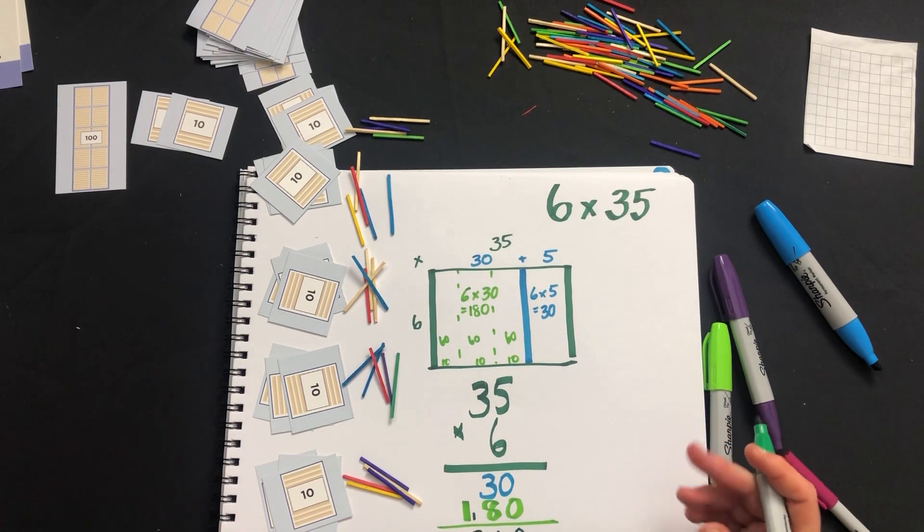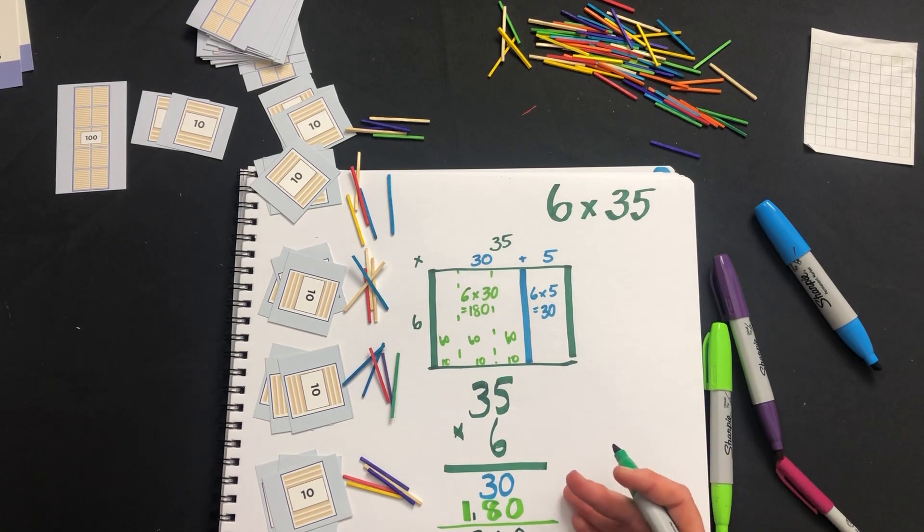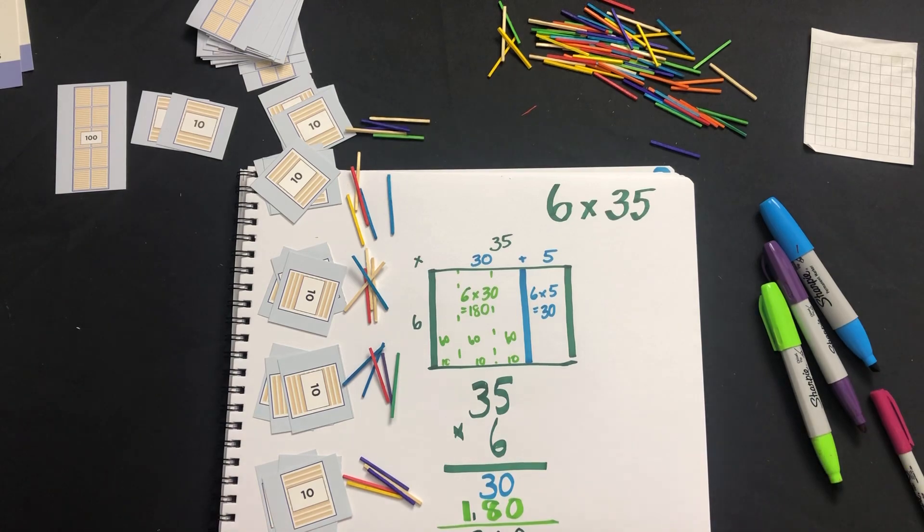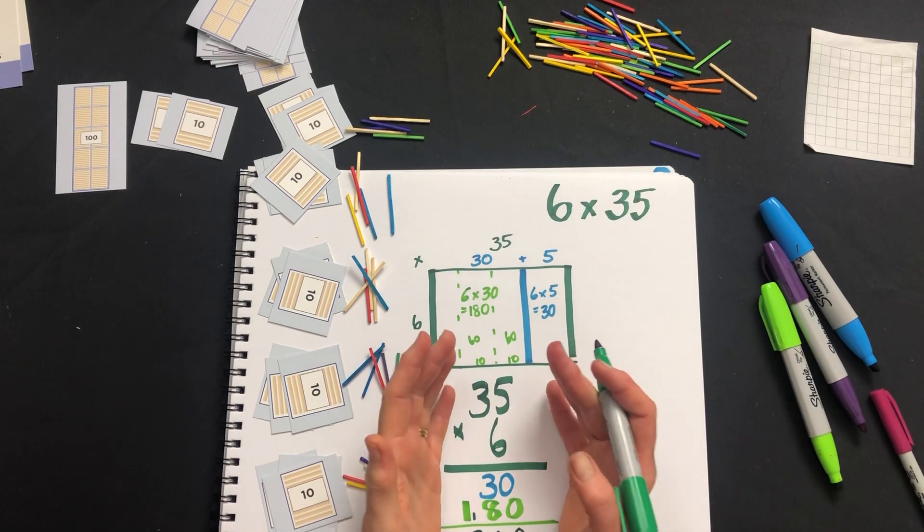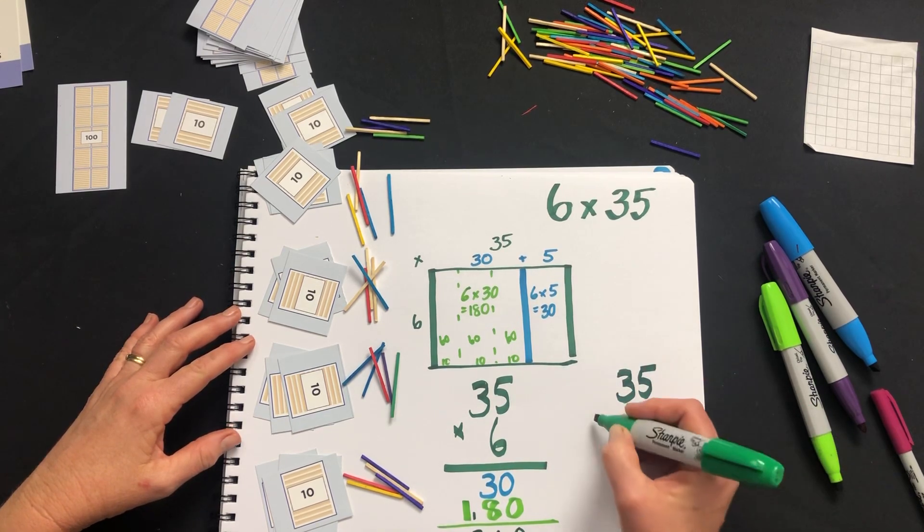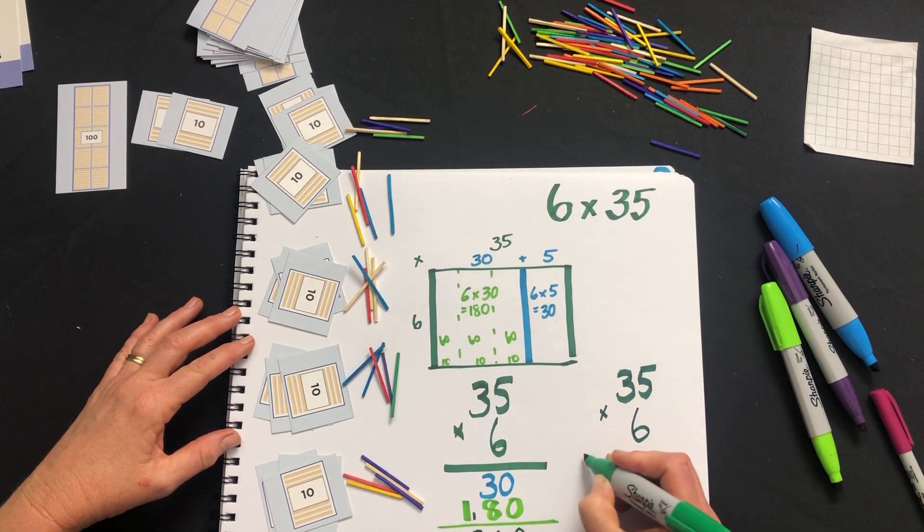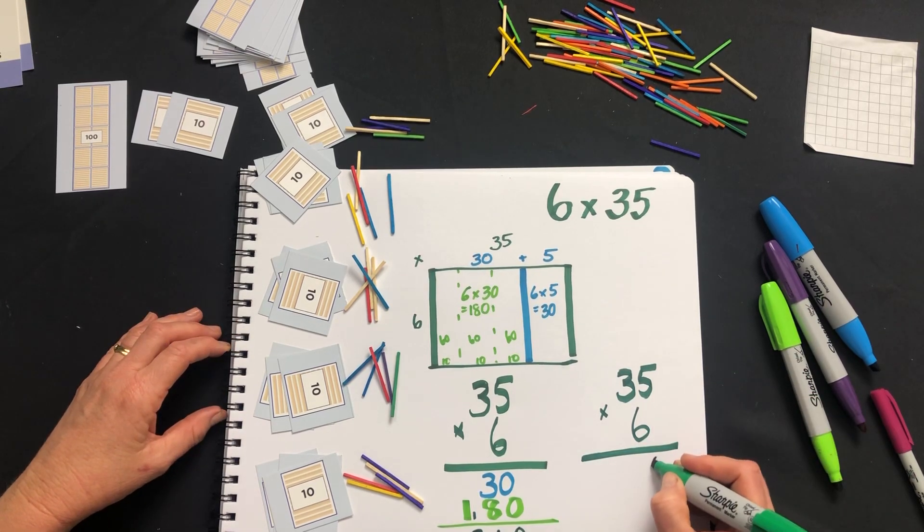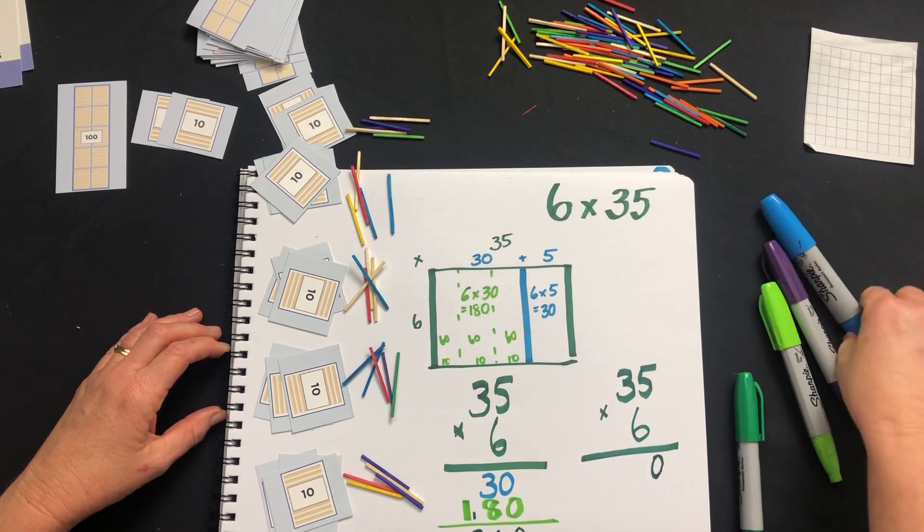Now I mentioned that your child may have been shown this as a single step, and I'll explain why I personally think it's important to get this right first before doing that. So if we have 35 times 6, it's often 6 times 5 is 30 - put down the zero and we carry this 3. And in fact, what we're carrying is the 30 or 3 tens over.